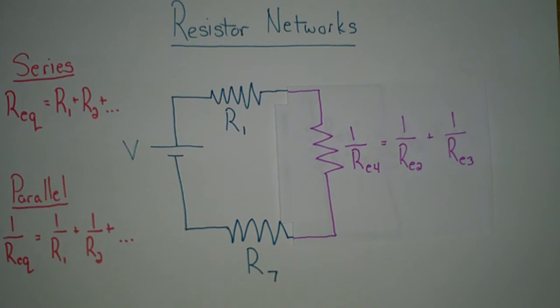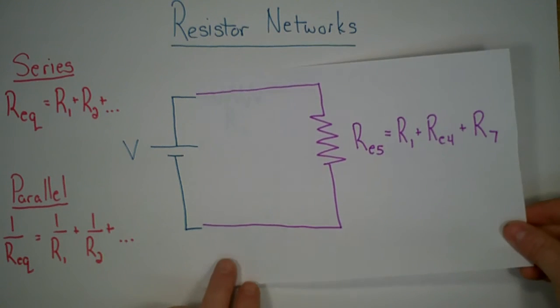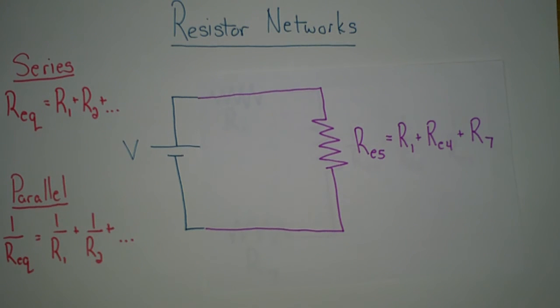Finally, we can see R1, RE4, and R7 are in series with each other, which gives us RE5, which equals R1 plus RE4 plus R7. We've simplified this down to one resistor.